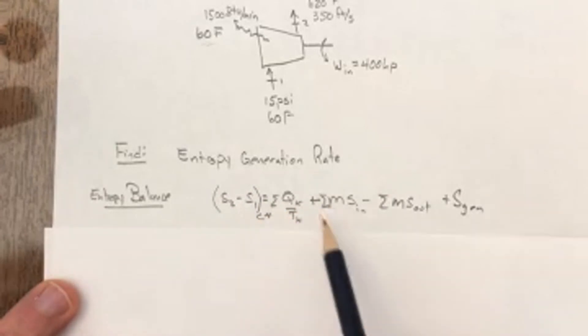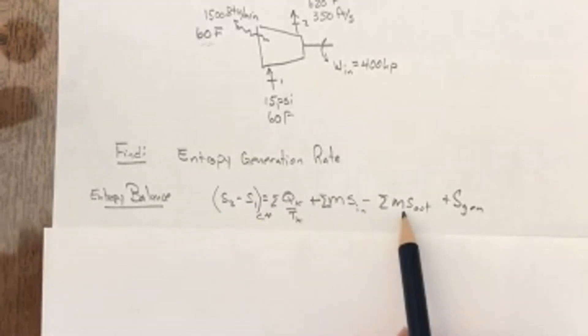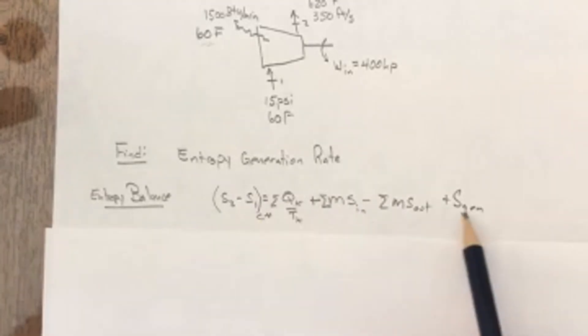And then you've got all the sums of the heat transfers divided by their temperatures at which they're communicating with the system, and then there's the mass flow in and S and the mass flow out, plus the entropy generation.